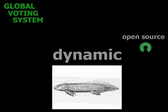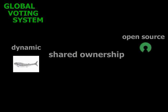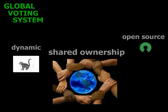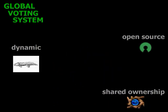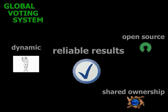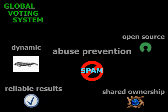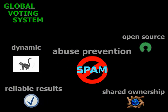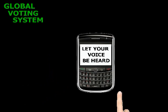It will be dynamic to keep up to date with emergent technology. It will be a shared resource available to everyone — owned by the people, for the people. The Global Voting System will also be designed to create credible voting results, with ways to prevent vote tampering, spam, marketing, and other forms of abuse.